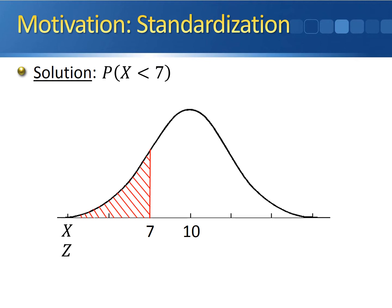Since we knew the standard deviation was three, we were able to intuitively figure out that x being equal to seven was equivalent to z being equal to negative one. Seven was exactly one standard deviation less than its mean. So the area to the left of seven in the original normal distribution is equivalent to the area to the left of negative one on the standard normal distribution.